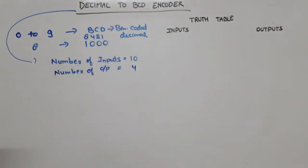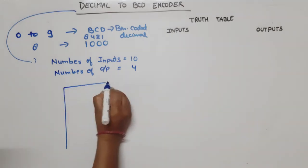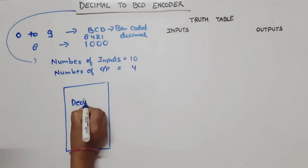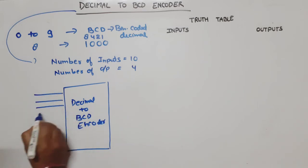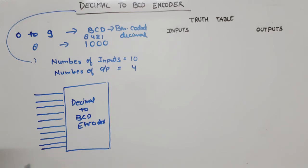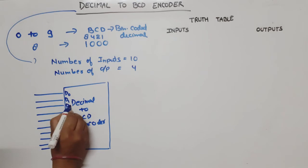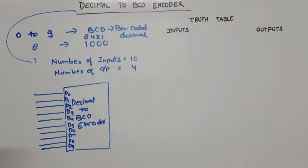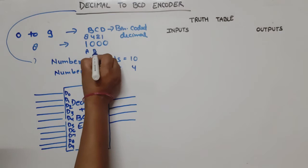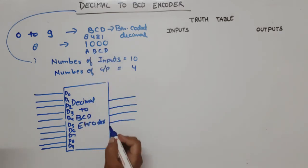Every digit we represent by four binary bits. Now if we see the block diagram - this is our decimal to BCD encoder. The inputs are D0, D1, D2, D3, D4, D5, D6, D7, D8, D9 - you can denote by I or D. The outputs we will name A, B, C, D. These are the outputs. This is the block diagram.